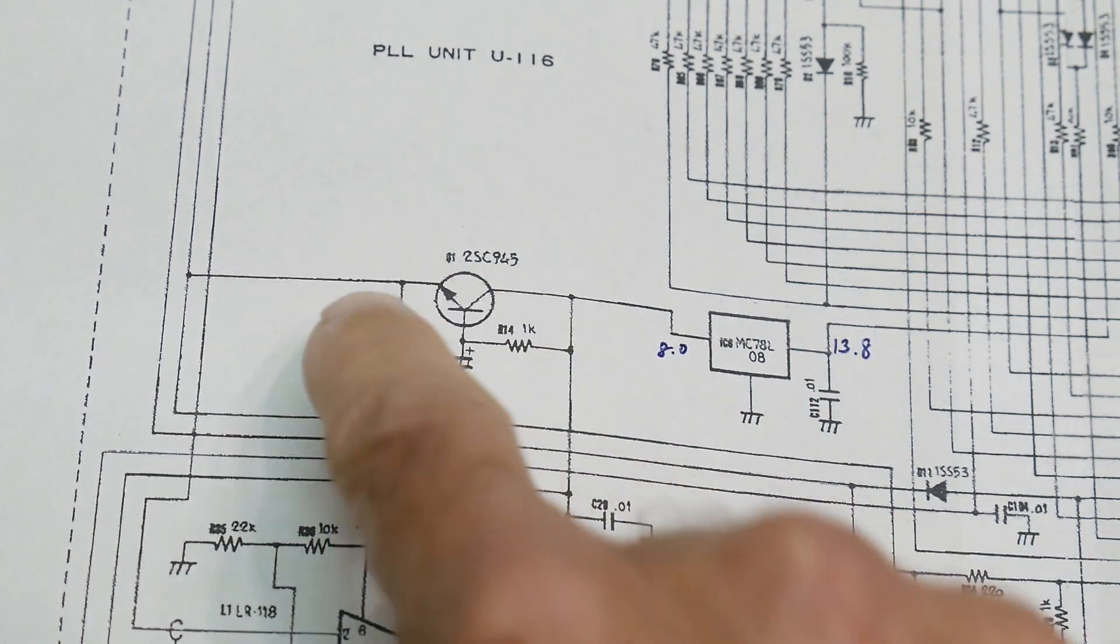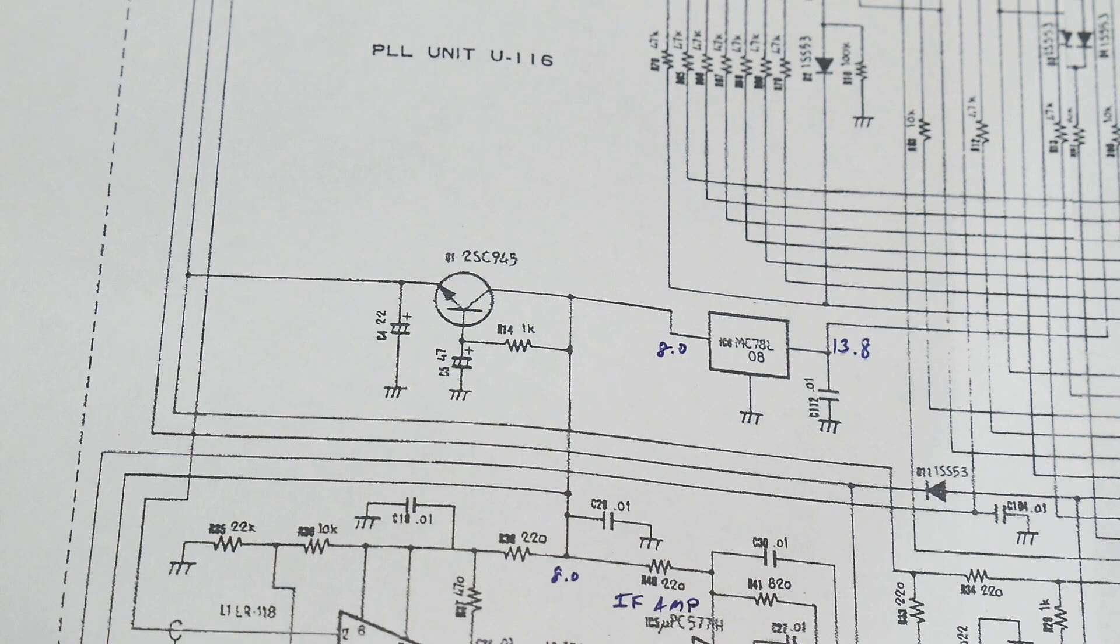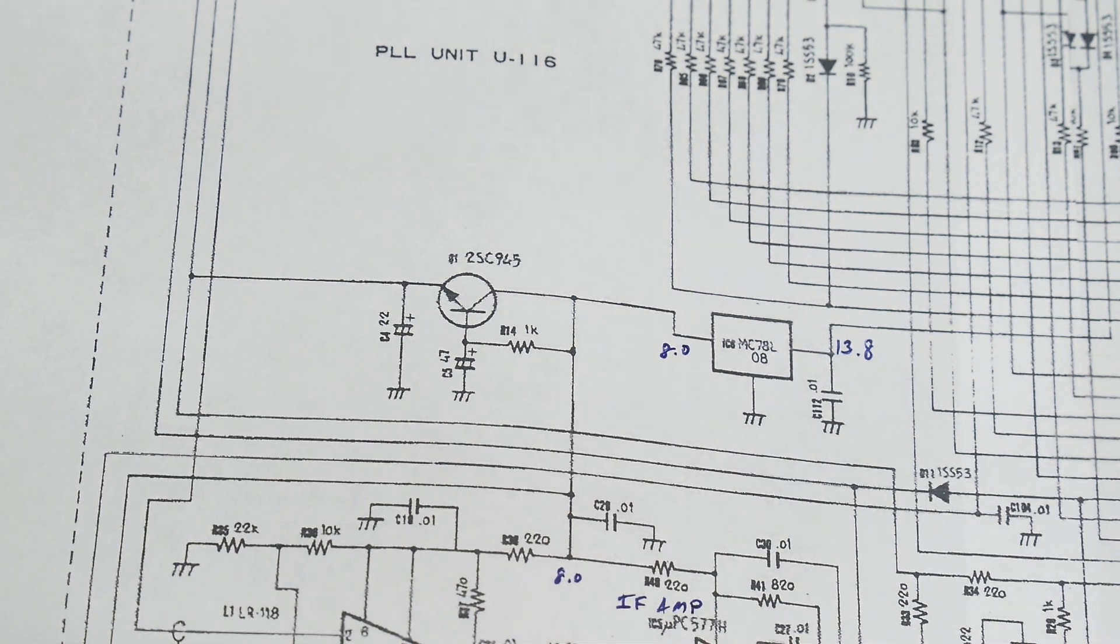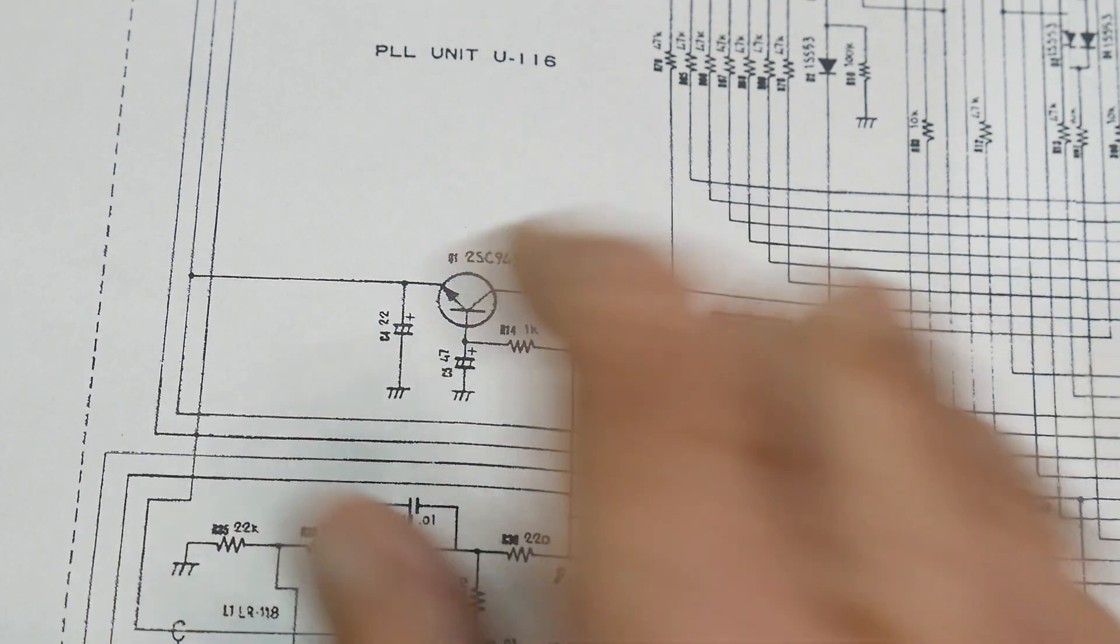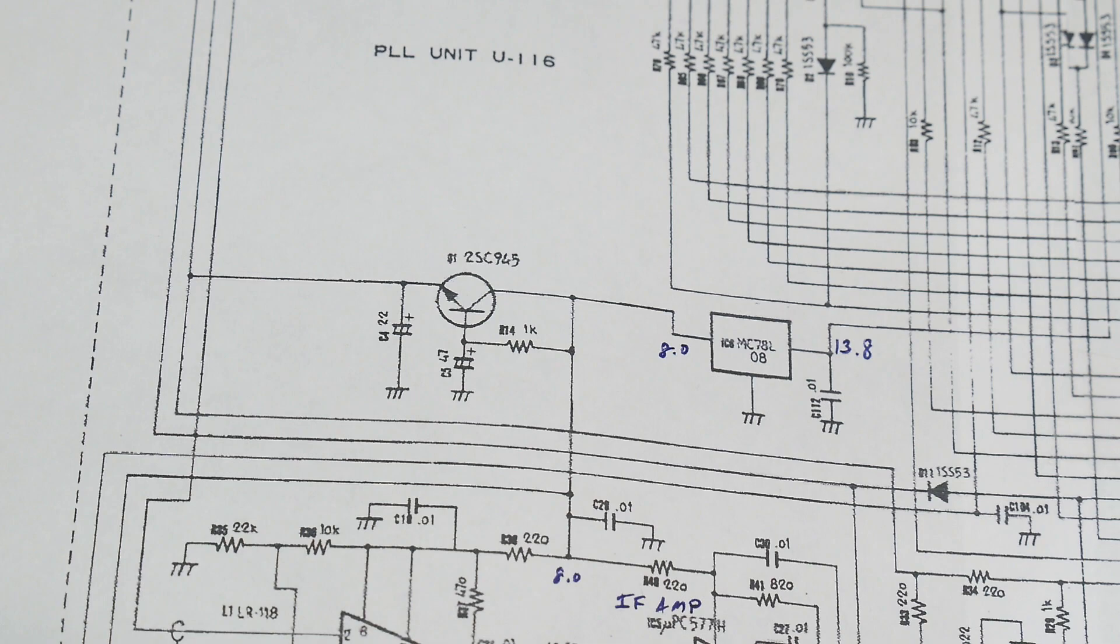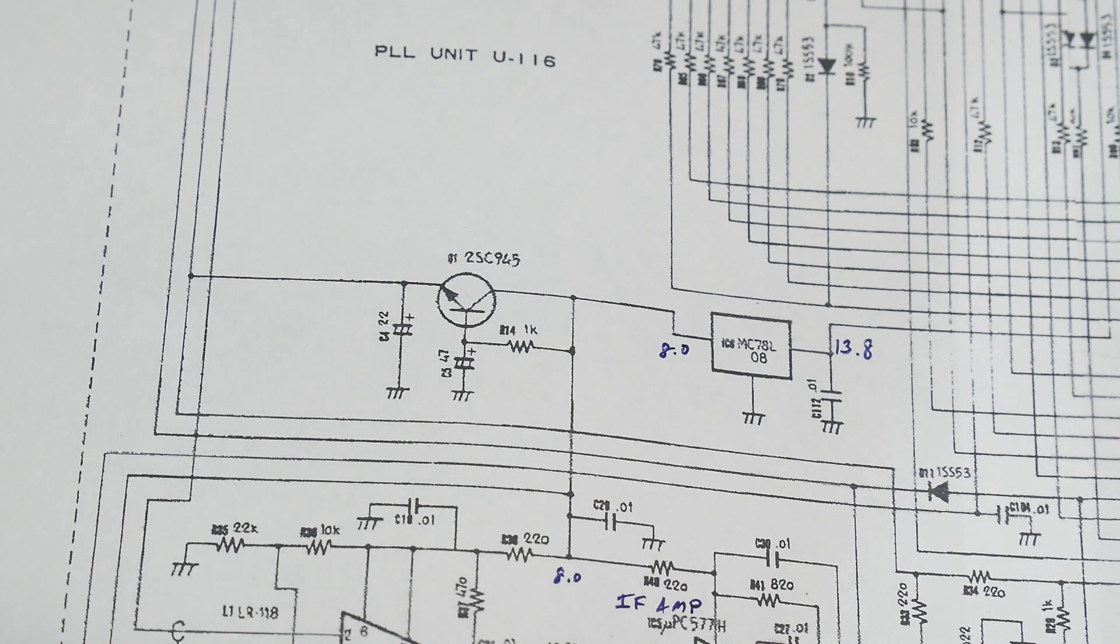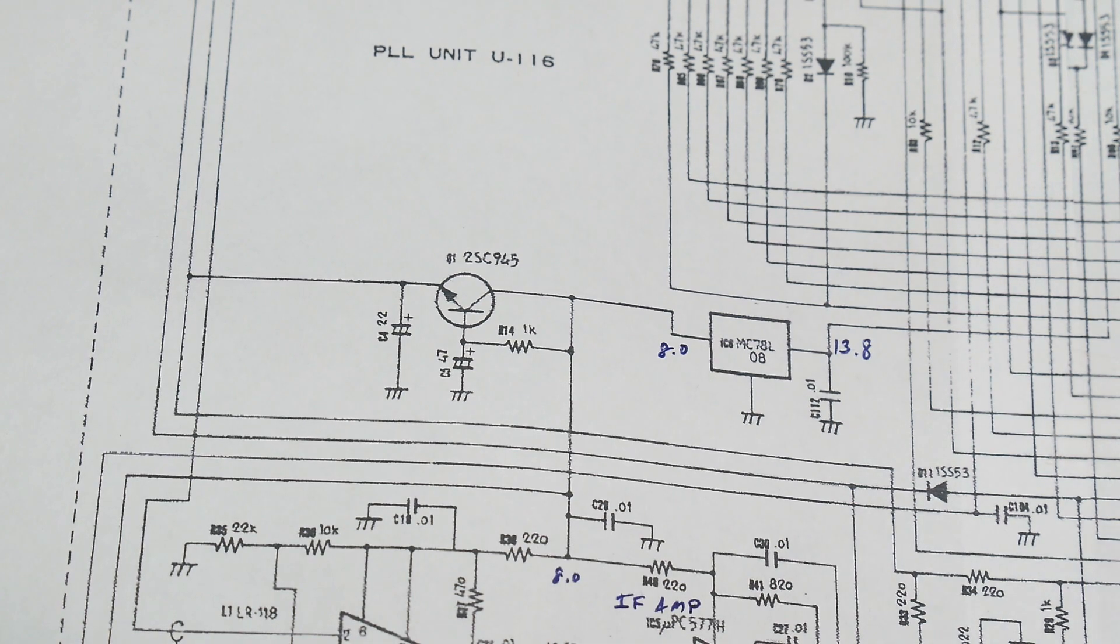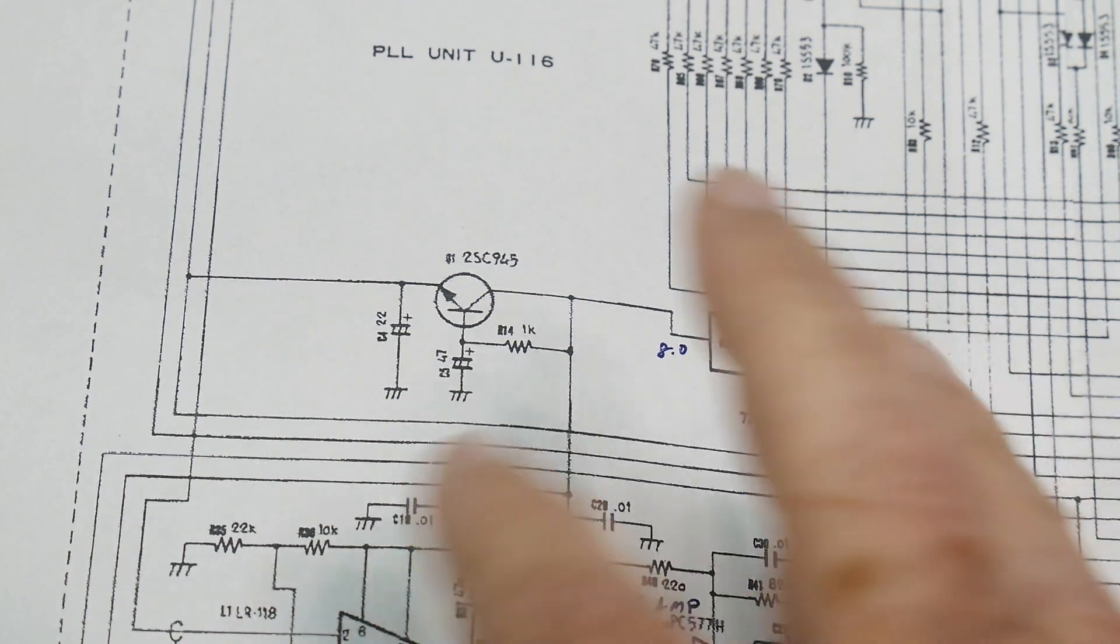So I replaced everything. I put new capacitors in, new transistor in, and it didn't work. Well, so I should say it did work. It outputted seven volts for a while, and I thought, oh I fixed it. Great! I put it all back together, and then the seven volts disappeared.